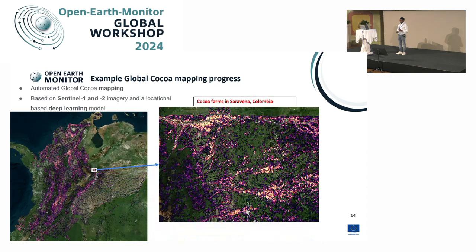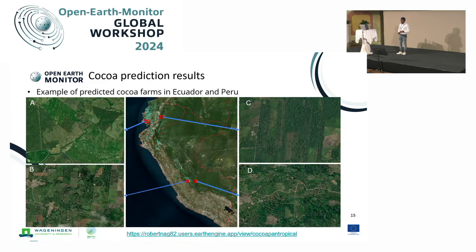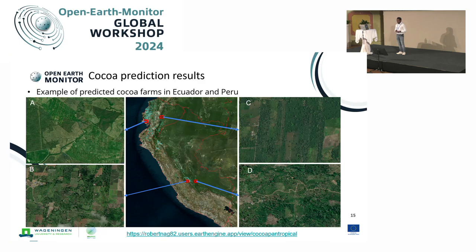Here is another example from Salavena — people from Colombia probably know this place. We have a lot of cocoa there; it's one of the areas with the most cocoa farms. We mix also pasture, but we're able to predict this area with very good accuracy. Going to Ecuador and Peru, where there is also a lot of cocoa — in Ecuador you can see a lot of new cocoa farms which we're able to detect, and in Peru there is a mix of small-scale agroforestry cocoa but also monoculture farms, which are new plantation-based forms of cocoa production.